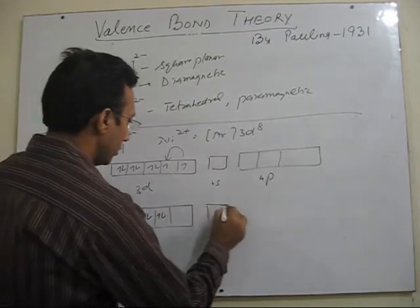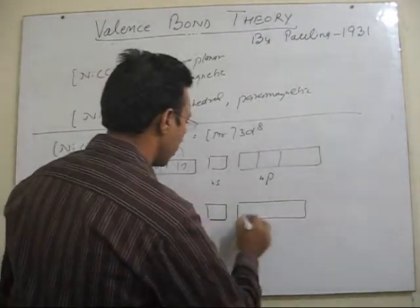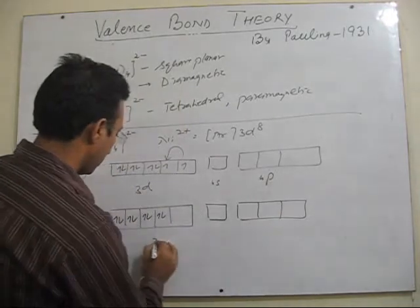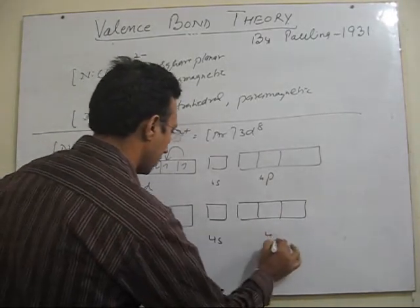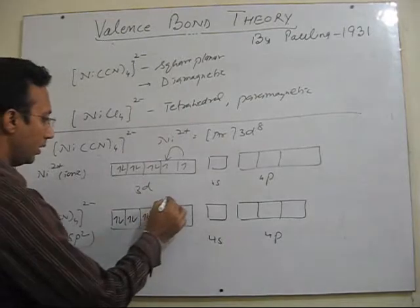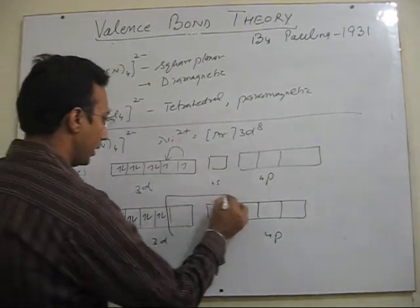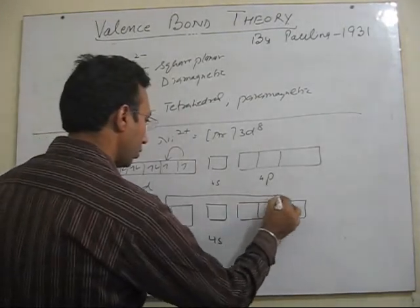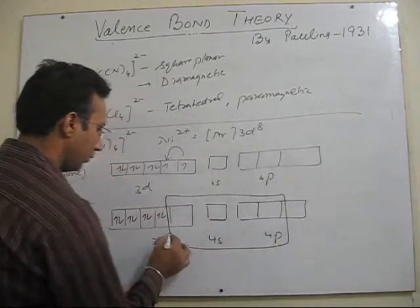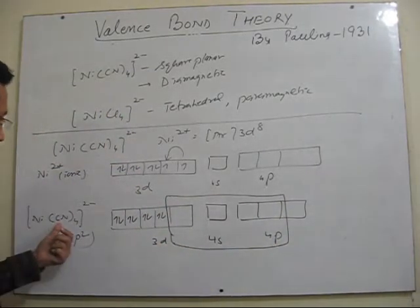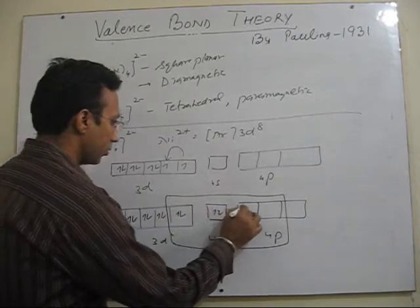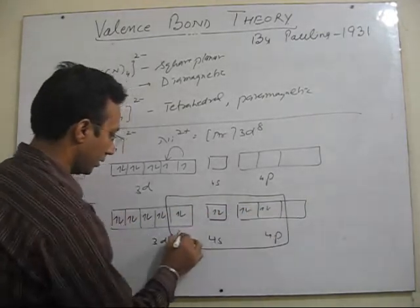So now 4s, 4p. As a result we need only 1d, 1s and 2p orbitals to accommodate 4 cyanide ligands. So cyanide will donate their electron pairs in these vacant orbitals.